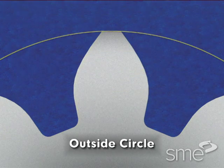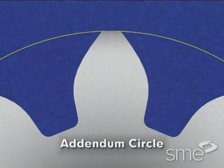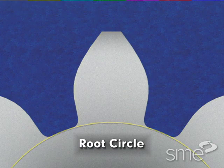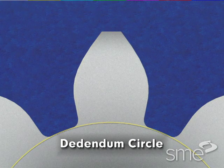The outside circle is the outside diameter of the gear and is also known as the addendum circle. The root circle is the gears root diameter and is tangent to the bottom of the gear teeth. The root circle is also known as the dedendum circle.